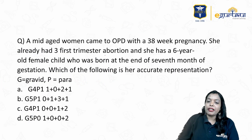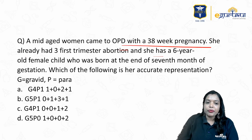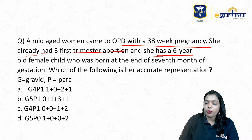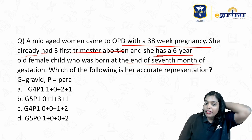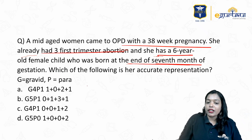A mid-aged woman came to OPD with 38 weeks pregnancy. She already has three first trimester abortions. She has a six-year-old female child who was born at the end of the seventh month. What is her accurate representation? Note here it is not G-PAL, it is G-T-PAL.